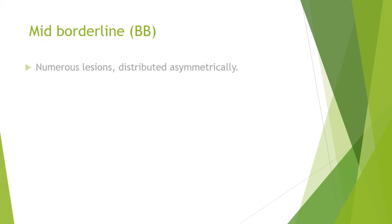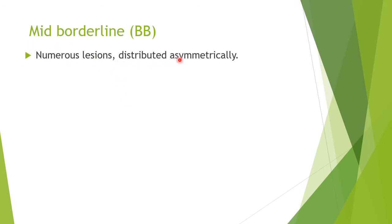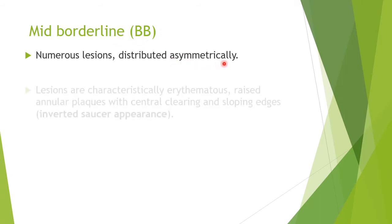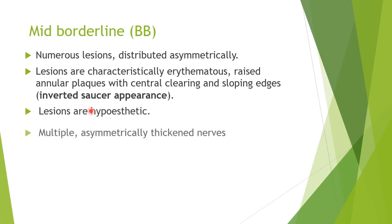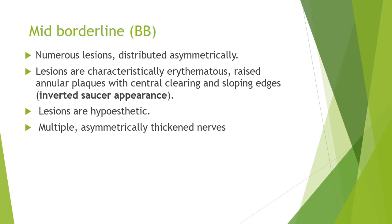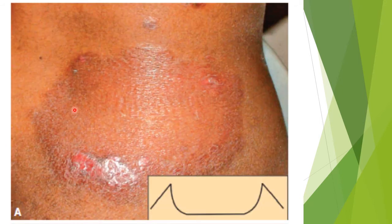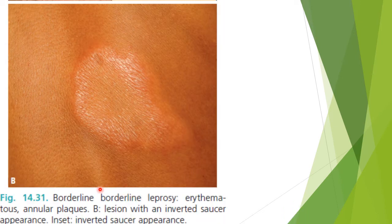In mid-borderline leprosy, there are numerous lesions distributed asymmetrically. As severity increases, lesions become more symmetrical. They are characterized by erythematous, raised annular plaques with central clearing and sloping edges, giving an inverted saucer appearance. Lesions are hypoesthetic and there are multiple asymmetrically thickened nerve knobs.